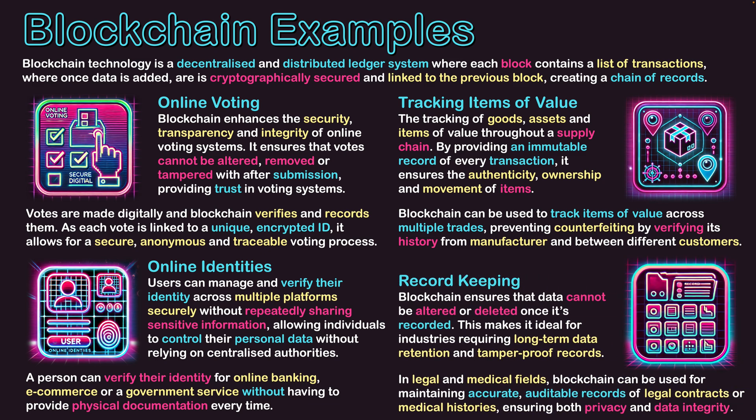The final area is record keeping. Blockchain ensures that data cannot be altered or deleted once recorded — things are cryptographically written into a new block every time a transaction takes place. This makes it ideal for industries requiring long-term data retention and tamper-proof records. They can build up a history of transactions locked into history, and as the data or entity is moved between systems or nodes of a network, that history moves with it as the blocks of the chain.